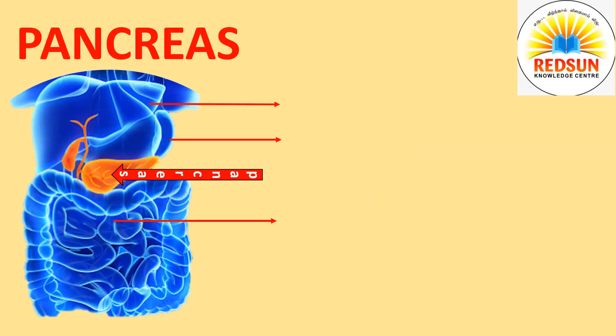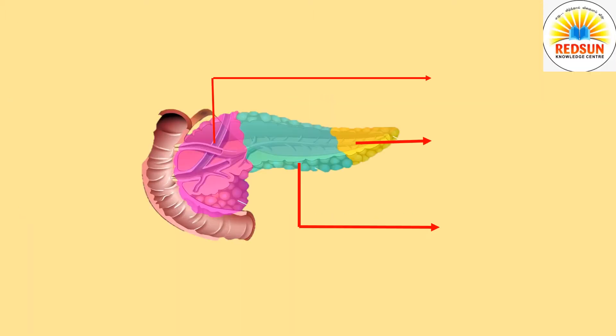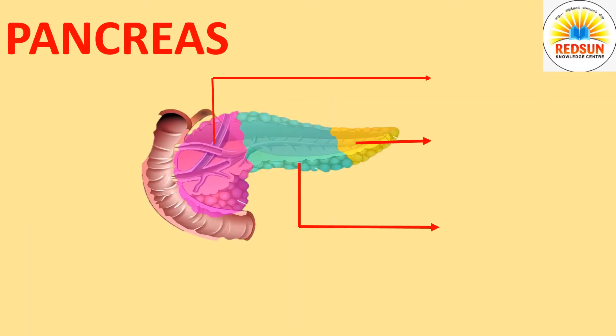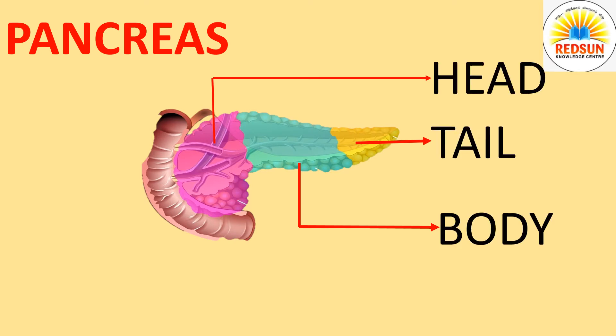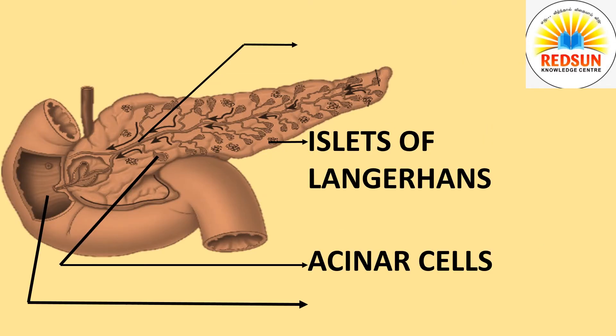It is surrounded by spleen, liver and small intestine. The pancreas is divided into head, body and tail. Pancreas is connected to the duodenum through a small tube called pancreatic duct.